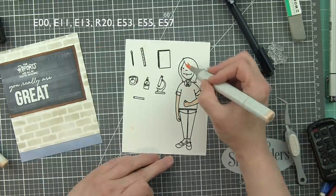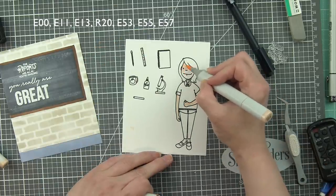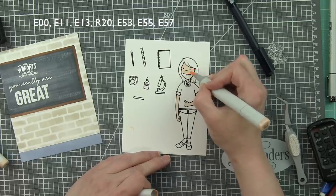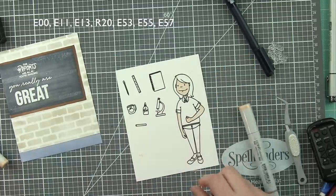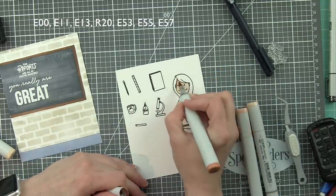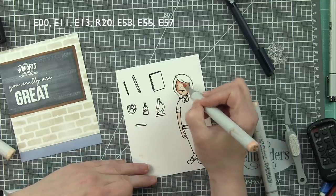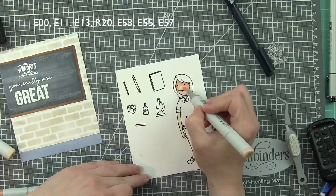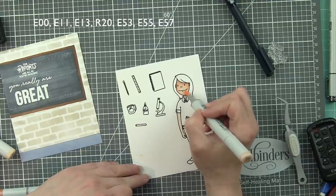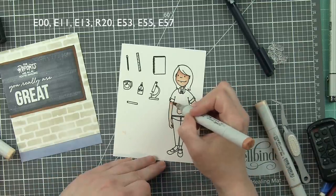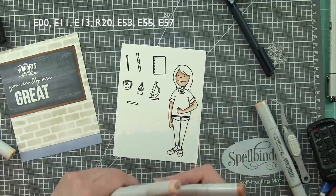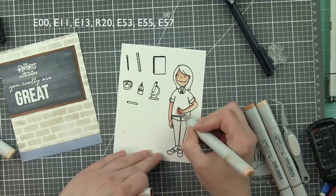I went ahead and stamped my elements from the teacher lady stamp set on some smooth white cardstock, and we're going to color everything in with Copic markers. I have left the coloring in today, and I have listed and linked the colors I'm using across the top of the screen for easy reference, starting with skin and hair.